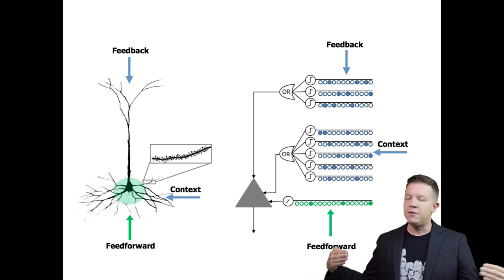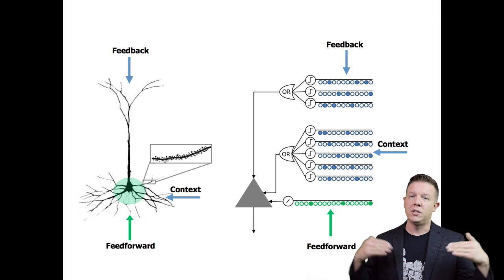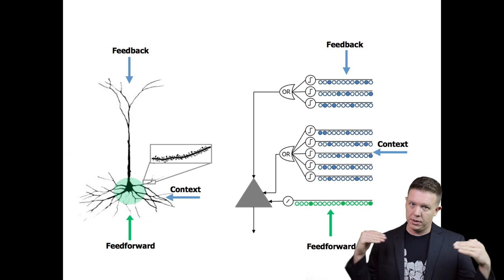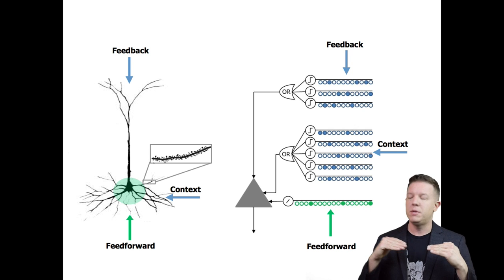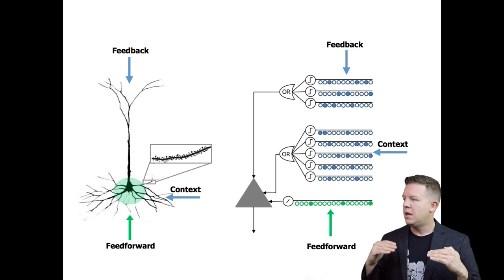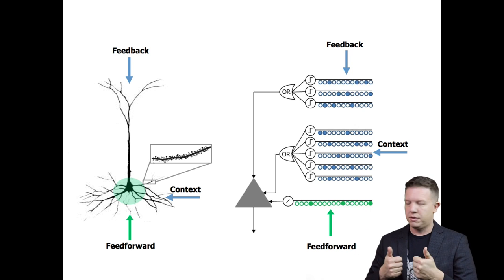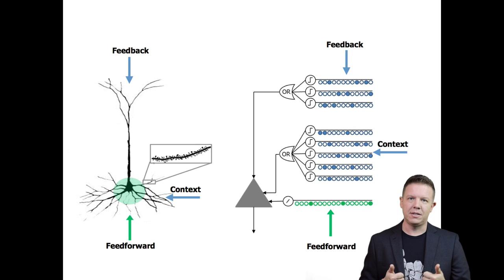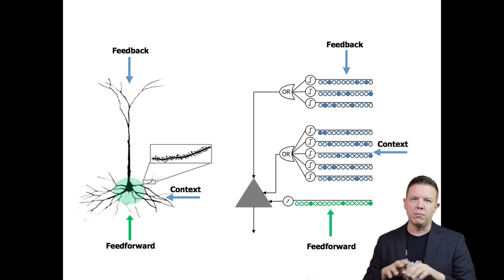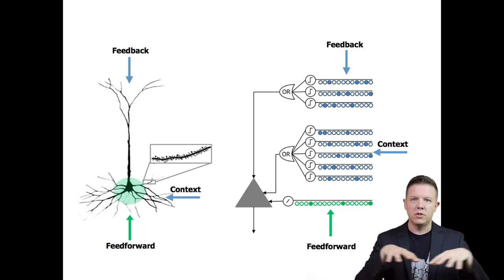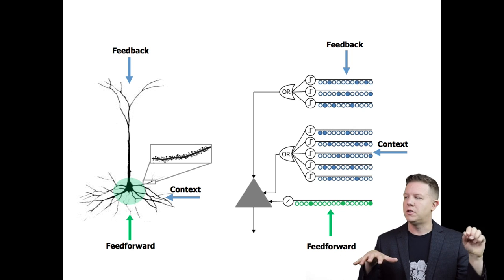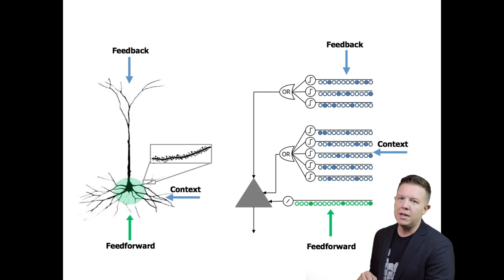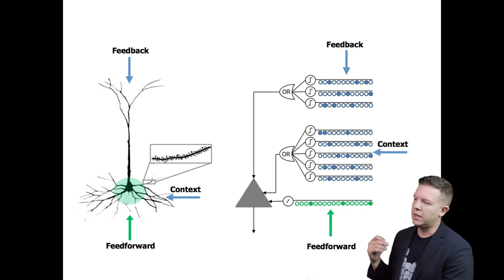We have the feedforward input, which is the proximal dendritic input from the input space in green here on both sides, and then the distal input from lateral connections to other cells within the space in blue for context.